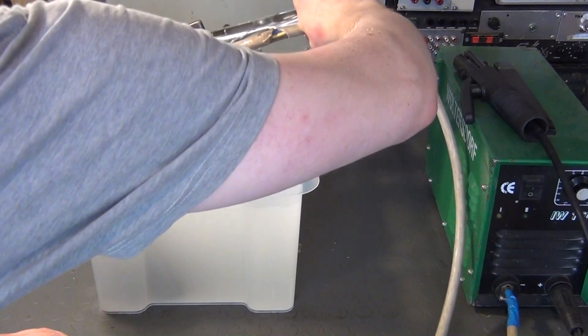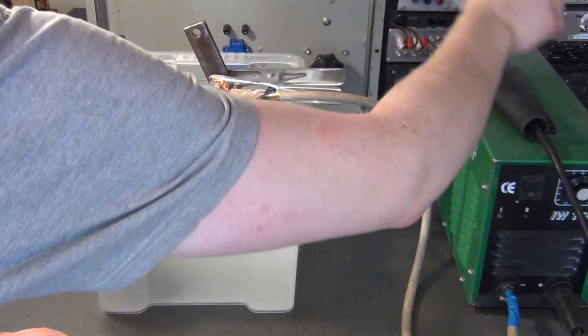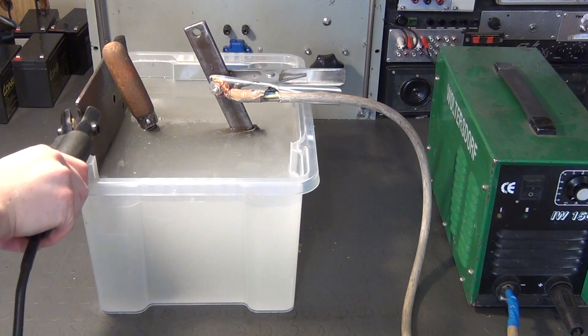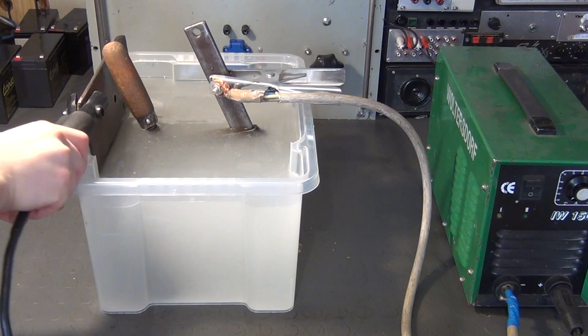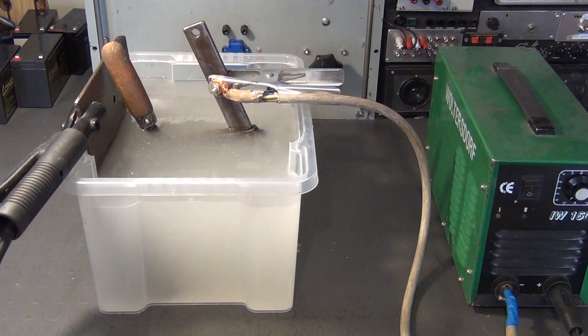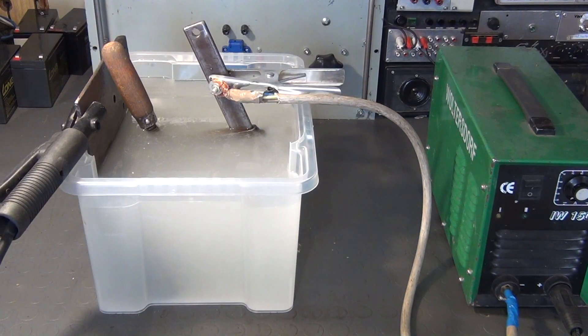Now you need a current source, the plus pole of which is to be connected to the sacrificial anode while the minus pole is to be connected to the workpiece. In many other videos you will see that people often utilize car battery chargers for this. You could also use an ATX power supply with similar results. But I'm going to use this manual metal arc welding machine here, often called a stick welder. And of course it has to be a DC stick welder.